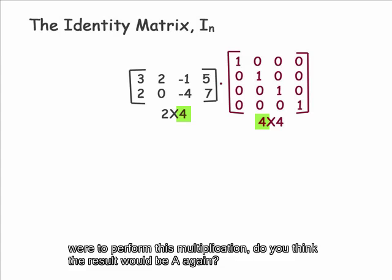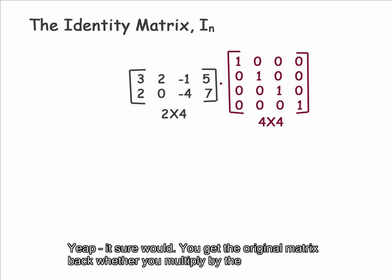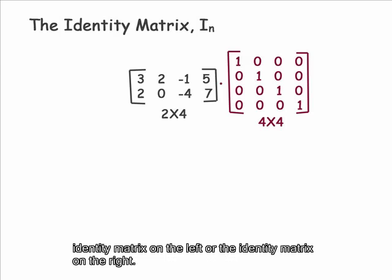And if we were to perform this multiplication, do you think the result would be A again? Yep, it sure would. You get the original matrix back, whether you multiply by the identity matrix on the left, or the identity matrix on the right.